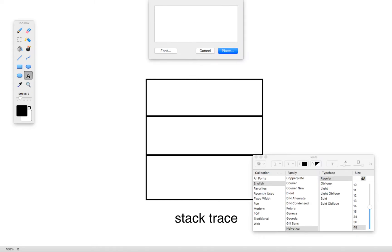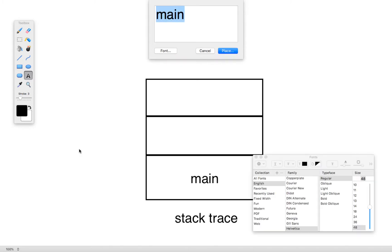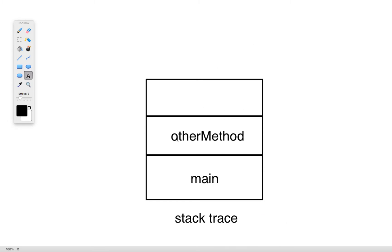This overall thing is going to be our stack trace, and the individual items, rather than being simple variables, are actually going to be methods. The very first one is going to be the main method. No matter what program you're running in Java, the main method is always the entry point of your program, so it's always the very first method that gets put onto this stack — sort of like our first plate. Then the next thing put onto it is whatever method we call inside the main method.